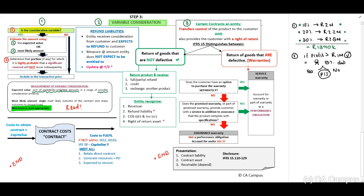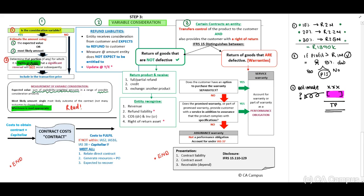Our next question is to determine the portion for which it is highly probable that a significant reversal will not occur. 'Highly probable' means more likely than not — one level higher than probable. Our first step is to estimate the transaction price, then determine if there is a possibility we will reverse a portion of this revenue. That portion to be reversed must be excluded from our estimate, and the remaining amount will be the transaction price.